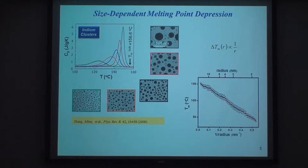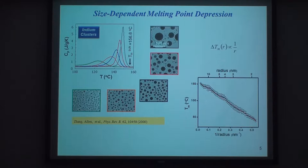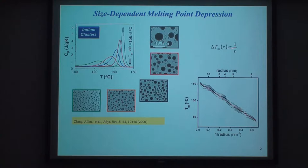This calorimeter device has been used in our group to study melting point depression. The best example we have is for indium clusters, where we see a very big melting point depression dependent on how big the nanoparticles are. This is a well-known thermodynamic effect described by the Gibbs-Thompson equation, where the change in melting point is proportional to the inverse of the radius of the nanoparticle. If you plot delta T as a function of inverse radius, you get a very good linear relationship, and the proportionality constant is typically related to the surface energy of the nanoparticle.